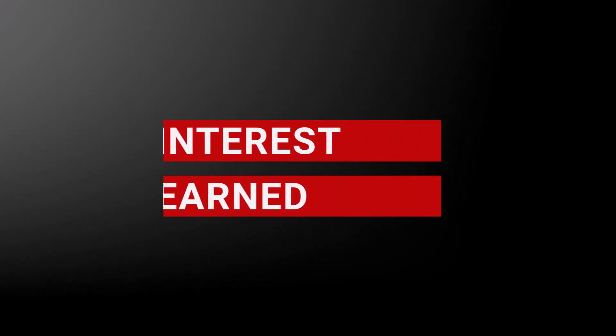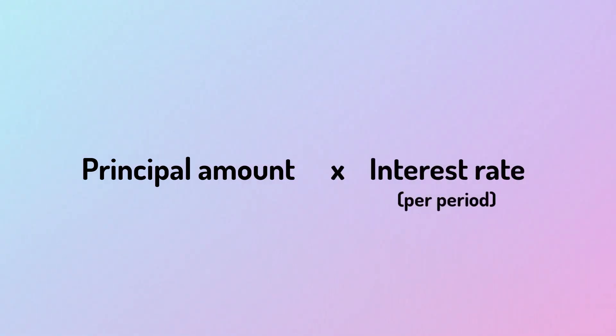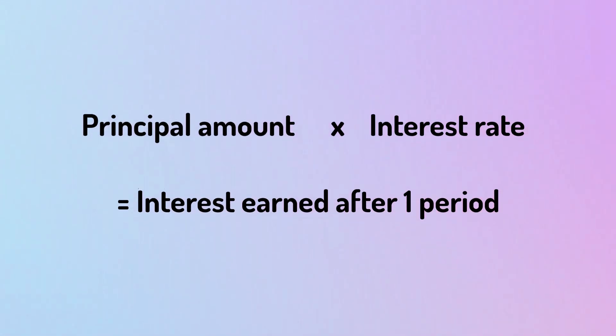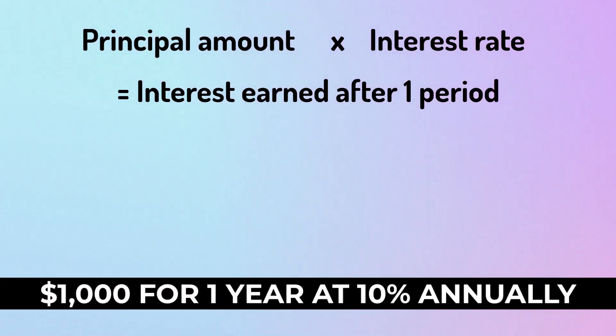To calculate the interest earned on any amount after a single period, simply take the invested amount and multiply it to the interest rate made into a decimal. The output, which now represents a portion of the investment, also represents the interest earned after one period. For example, if you decide to invest $1,000 into an account today for one whole year at 10% annual interest, you can calculate the interest earned by multiplying $1,000 by 0.1, since 10% is 0.1 as a decimal, and this equals $100.